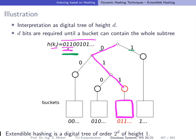Extendable hashing, as we will see on the next slides, you can think of as a digital tree of order 2 to the d. The height of this tree is 1.